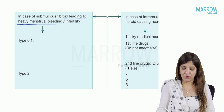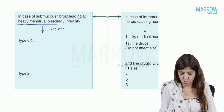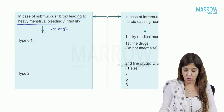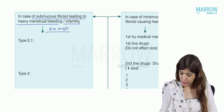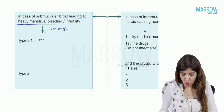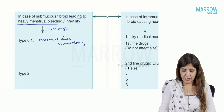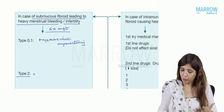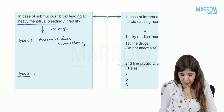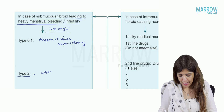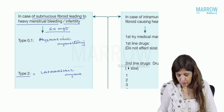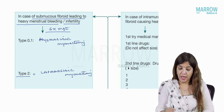For submucous fibroids with heavy menstrual bleeding or infertility: in Type 0 and Type 1, you do hysteroscopic myomectomy — myomectomy means removing only the fibroid. If it is a Type 2 variety of submucous fibroid, it cannot be removed hysteroscopically, so you go for laparoscopic myomectomy.